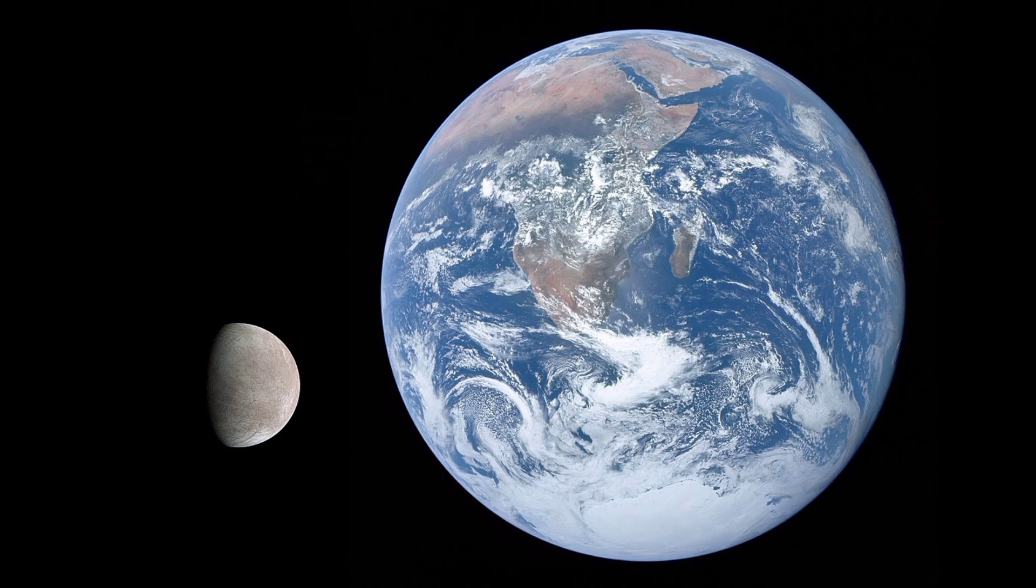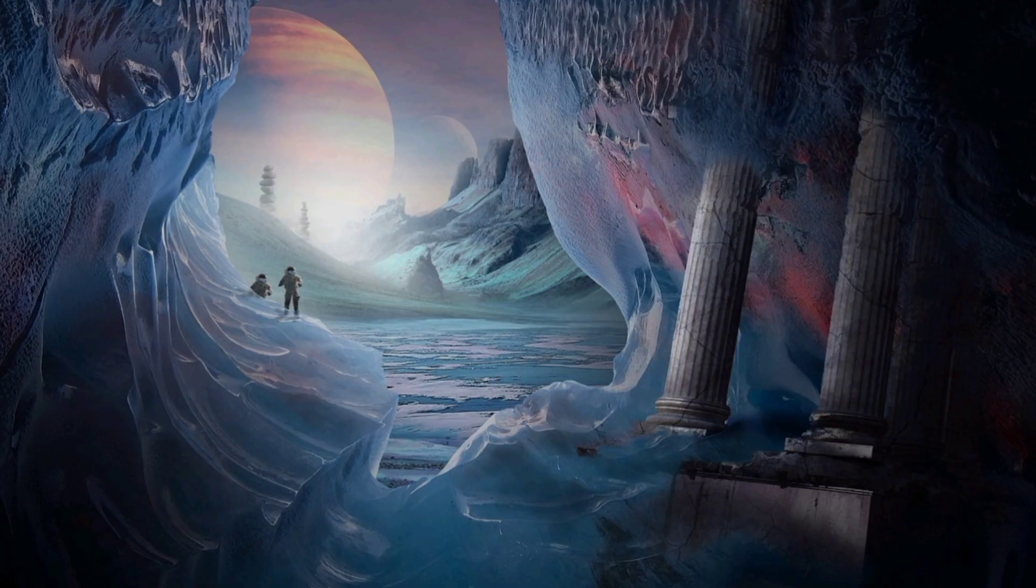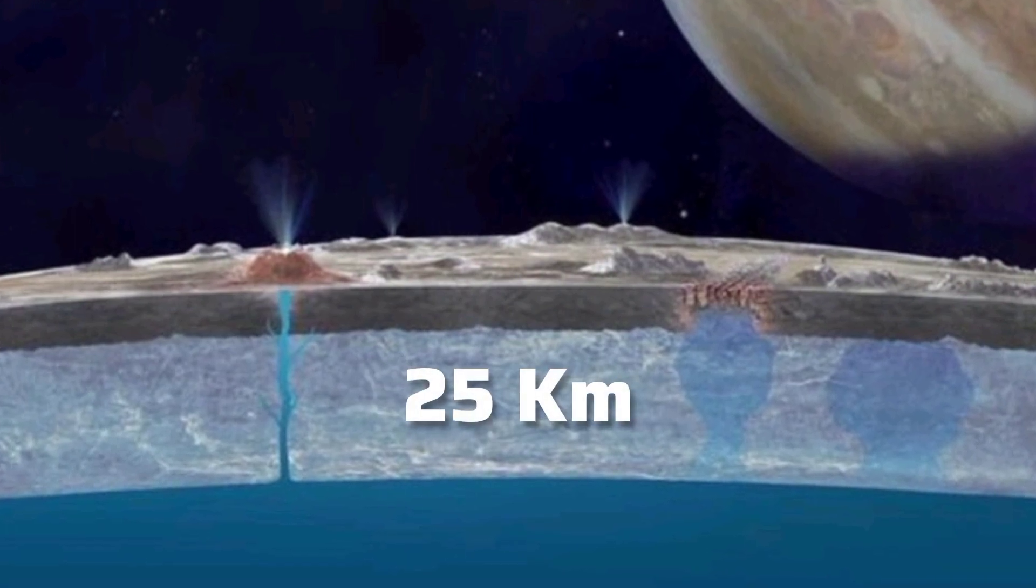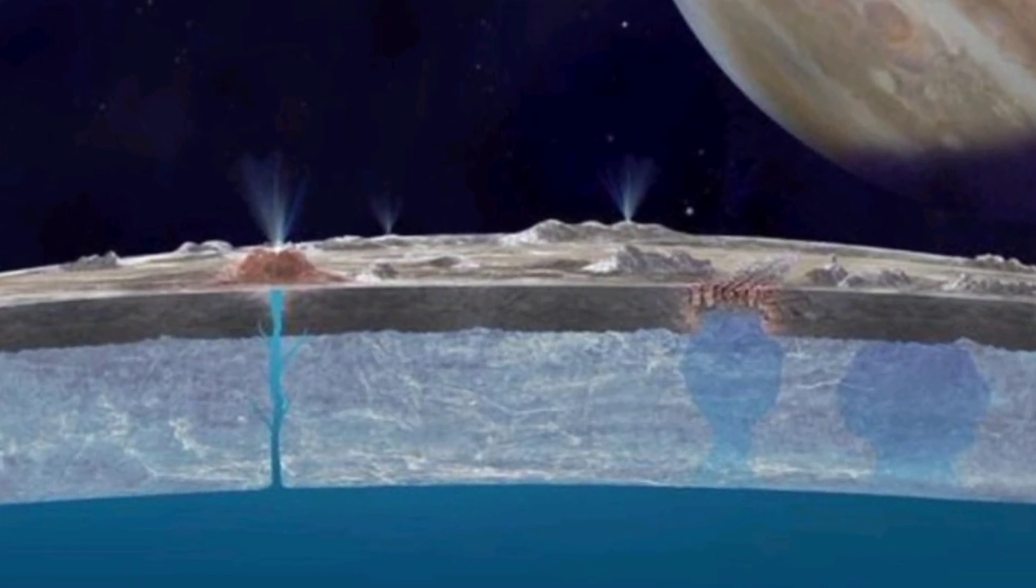First, Europa is about 630 million kilometers away from Earth, but that would not stop us from exploring it. Europa also has a thick layer of ice, up to 25 kilometers thick, making it hard for our missions.